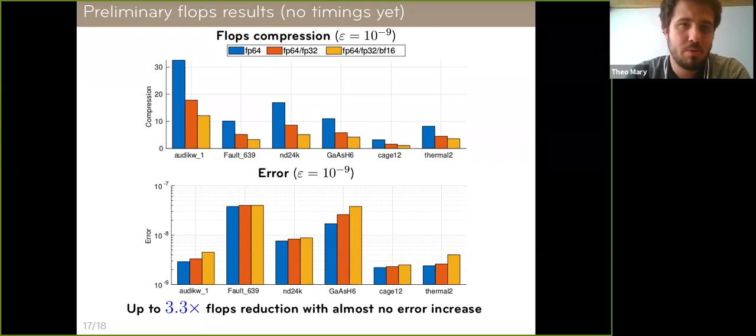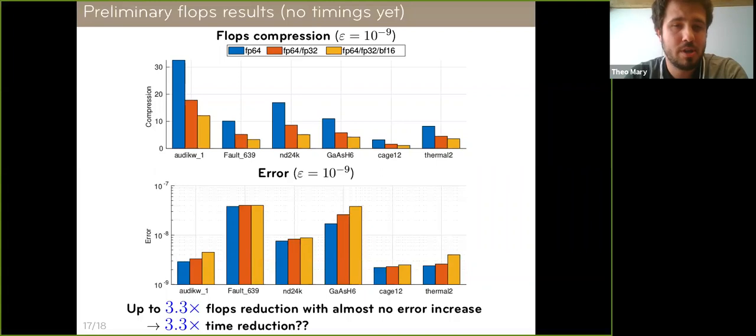Of course, what we're all wondering is whether that means we're going to get a 3.3x reduction in time. So that is something that we can't answer at the time. We need to do a high performance implementation of this idea. But one thing that I wanted to mention is, as I said at the beginning of this talk, sometimes we get time reductions that are larger than what the number of bits would suggest, like with tensor cores. So if we plug those assumptions in, we get up to 7x reduction. So I think this is clearly a little bit optimistic or perhaps very much optimistic, but it still shows that there is quite a lot of potential here behind this mixed precision approach.